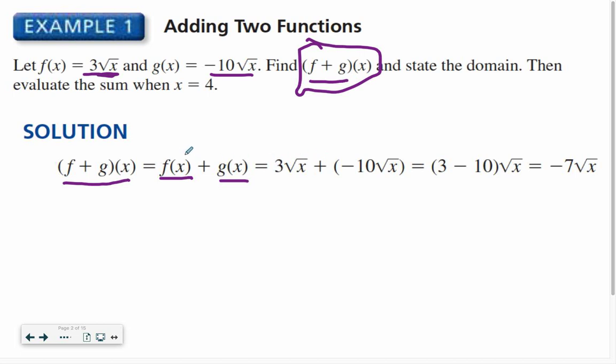So all I'm doing is I'm replacing my f of x, which is 3 times the square root of x here, and I'm adding my g of x, which is my negative 10 times the square root of x. You can skip this step here if you want, but I like to go right from here to here.